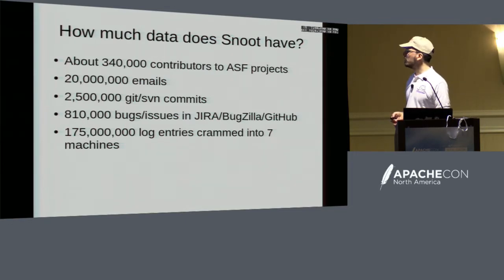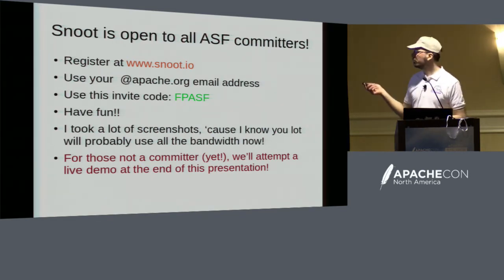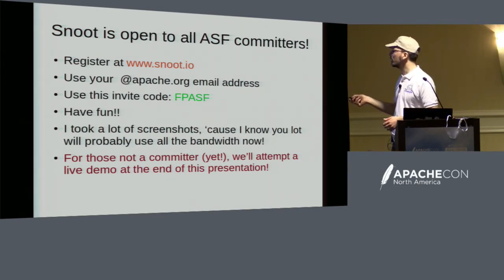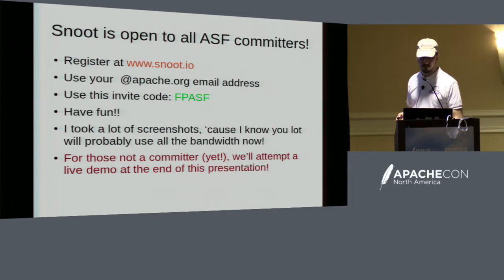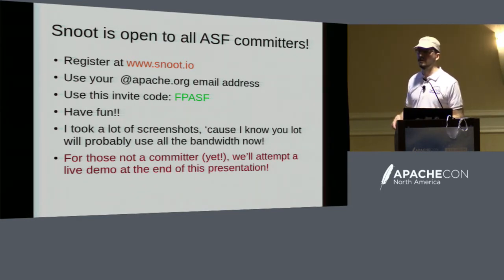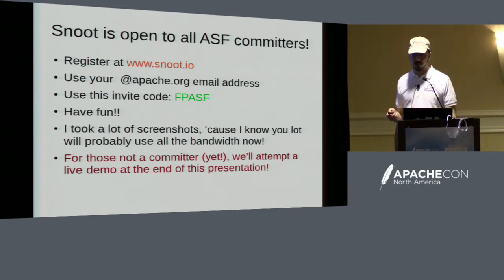155 million entries crammed into seven machines — two big ones and five small ones. It's open to all committers. If you don't have an account on Snoot yet, you can go to www.snoot.io and use your @apache.org email address and this specific invite code. It's important that you use that code if you want to get into the ASF organization, otherwise you'll just get into a demo organization. I took a lot of screenshots because sometimes if we have 20 people using the ASF instance, it can get a bit slow since it is live data crunching. For those not a committer, I will show a live demo later.